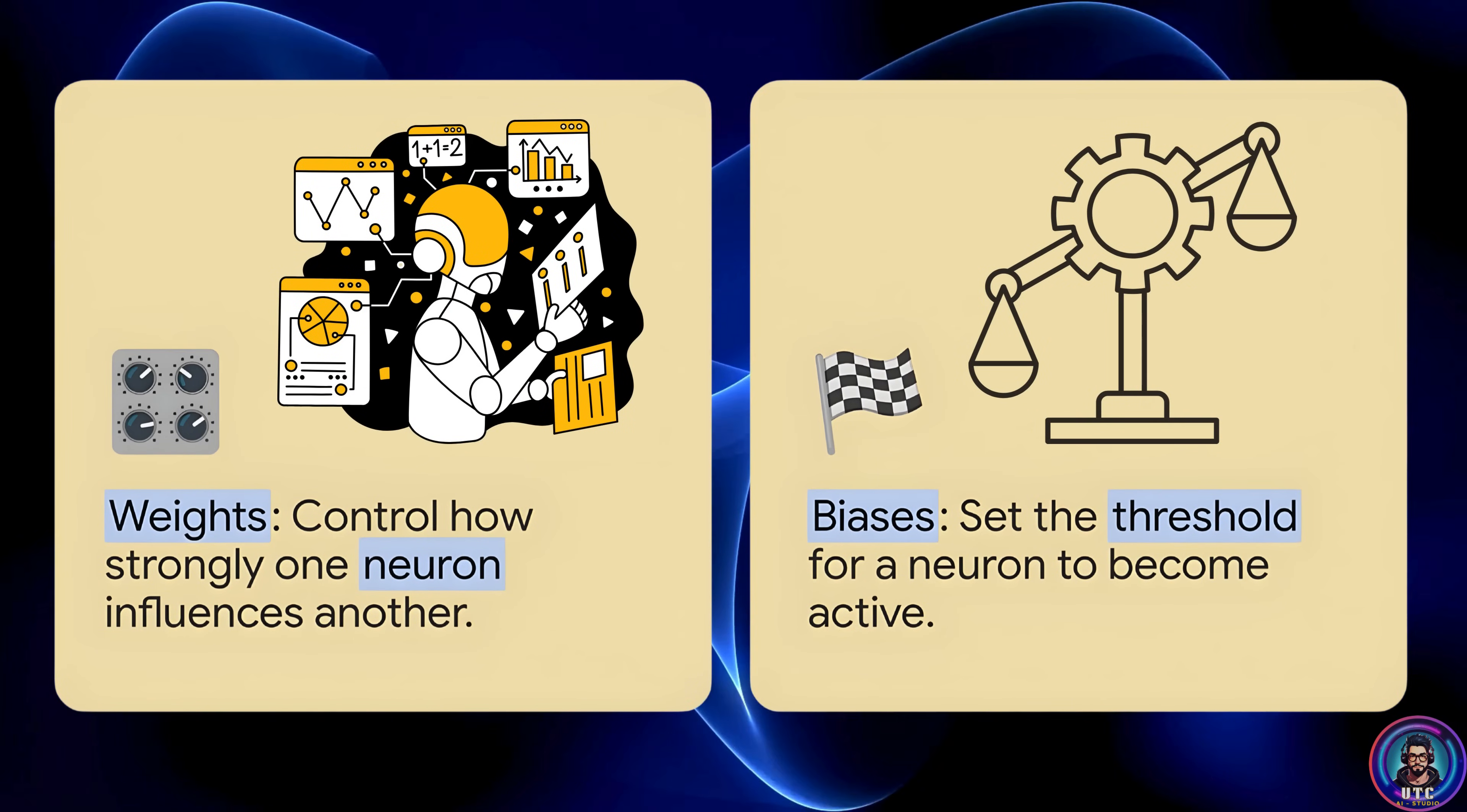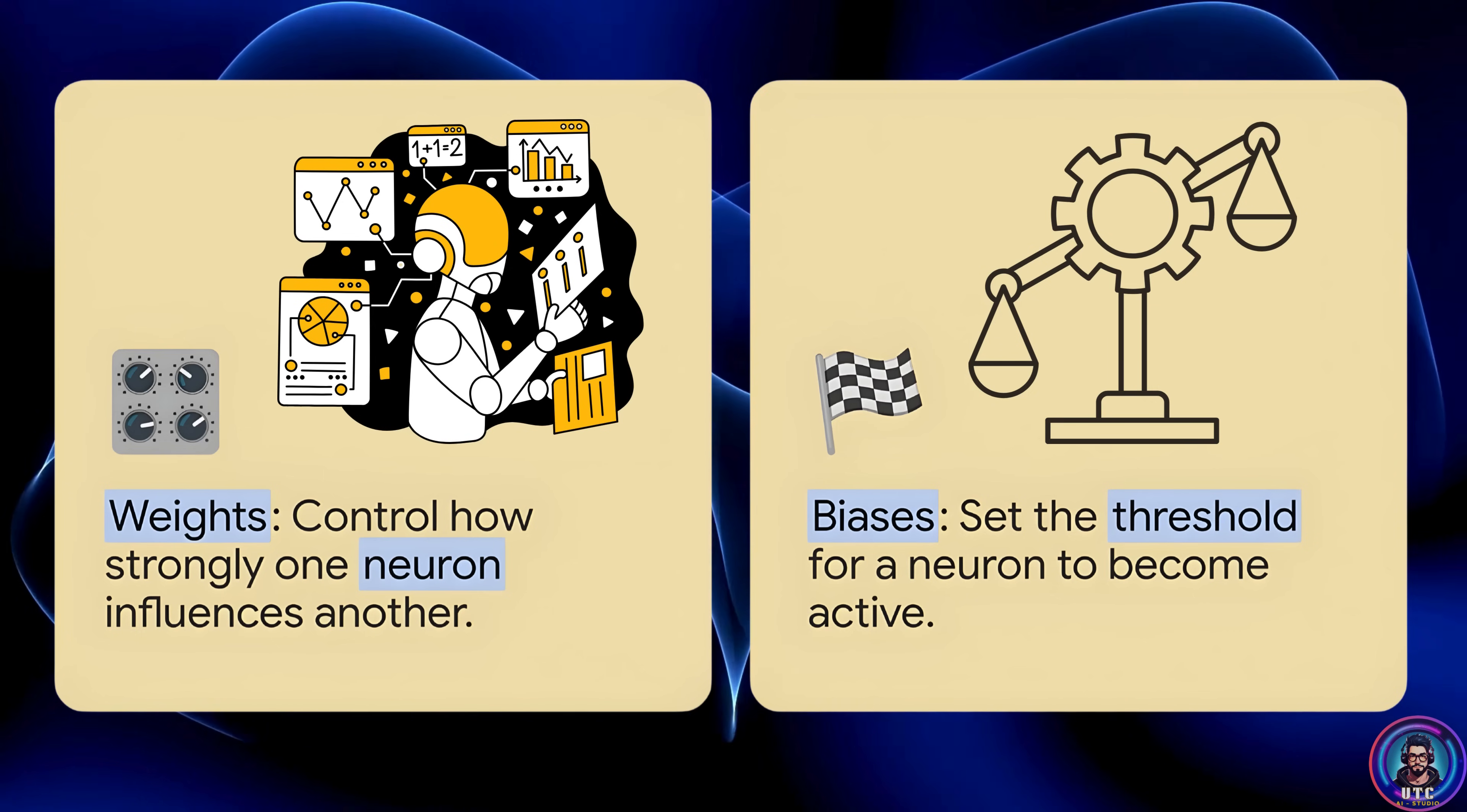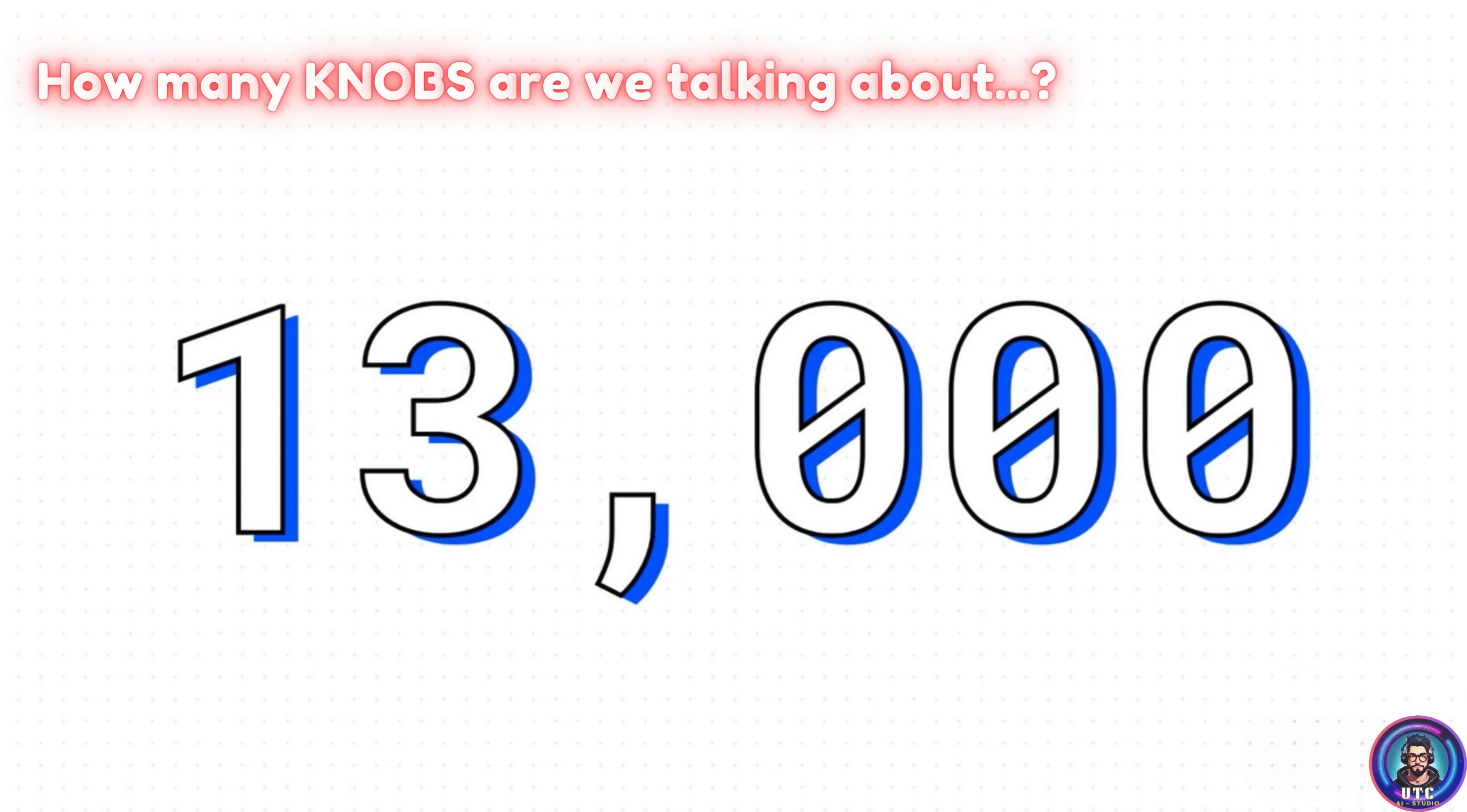The way a network learns is by tweaking thousands and thousands of tiny dials and knobs. And there are two types. The first are the weights. Think back to our surfing example. The weight was how important the waves were. Here it's the same idea. A weight controls how strong the connection is between two neurons. The second type are biases. You can think of a bias as basically setting that threshold we talked about. It makes a neuron either easier or harder to activate. So you've got all these weights and biases. Thousands of little knobs that the network can turn to tune itself and do better. But how many knobs are we talking about? For our simple digit recognizer, there are almost 13,000 of them. 13,000 individual dials and knobs that have to be tuned to just the right setting for this thing to actually work.